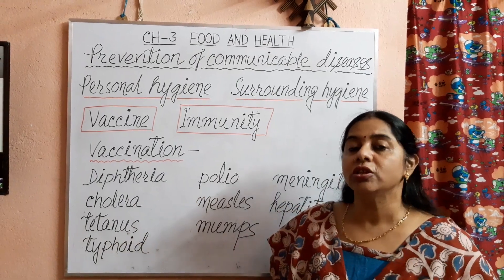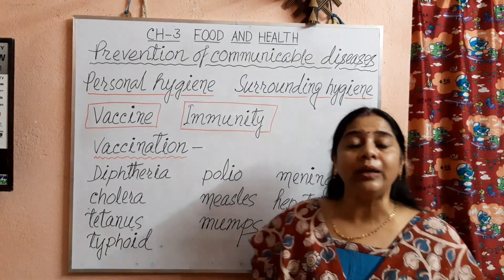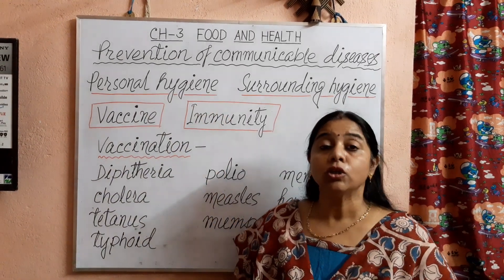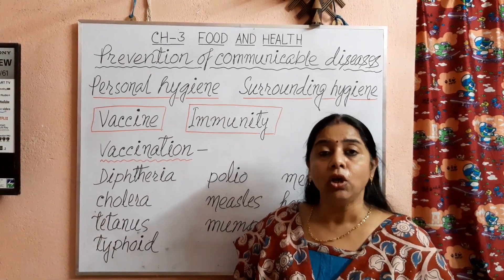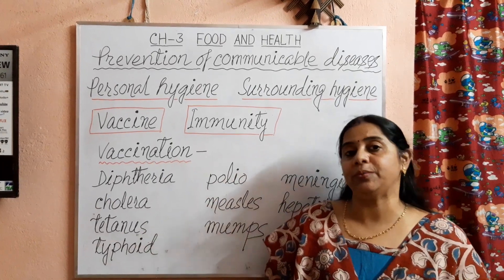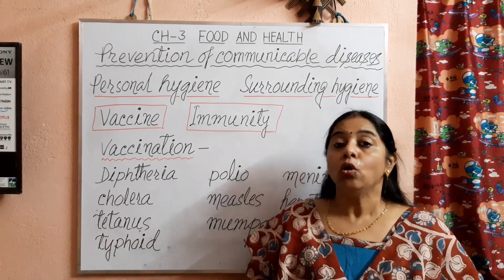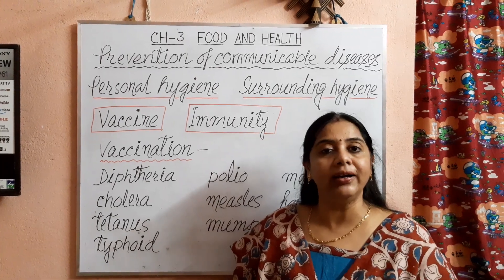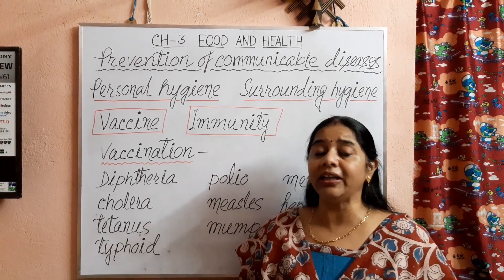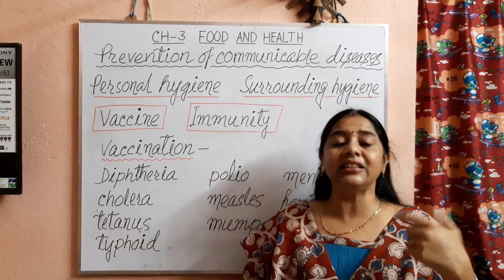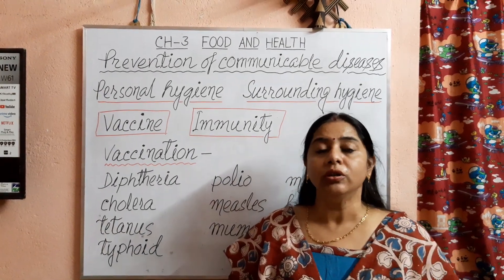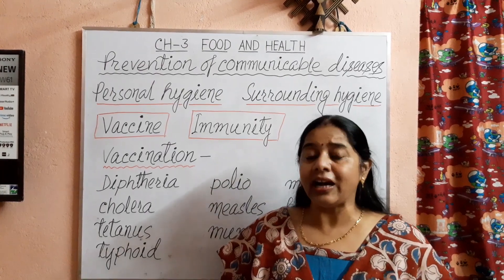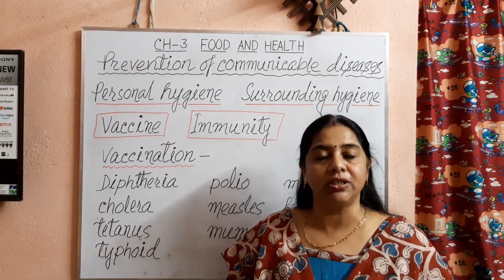Let us first see what are the steps of maintaining personal hygiene. Children, to maintain personal hygiene, we should follow some steps. The first one is we should brush our teeth and take a bath regularly. We should brush our teeth twice daily — that is in the morning and before going to bed. We should also take a bath regularly with soap and clean water.